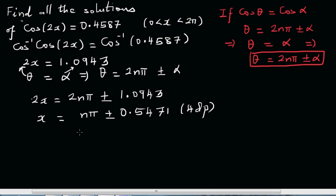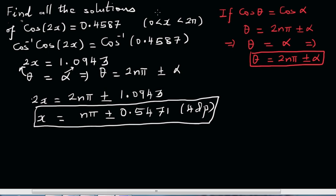We're almost there. This is the general solution. Now we want to write all the solutions between 0 and 2π. If you want to write this as a decimal, x is between 0 and 2π is 6.28. We want to find all the solutions between 0 and 6.28.